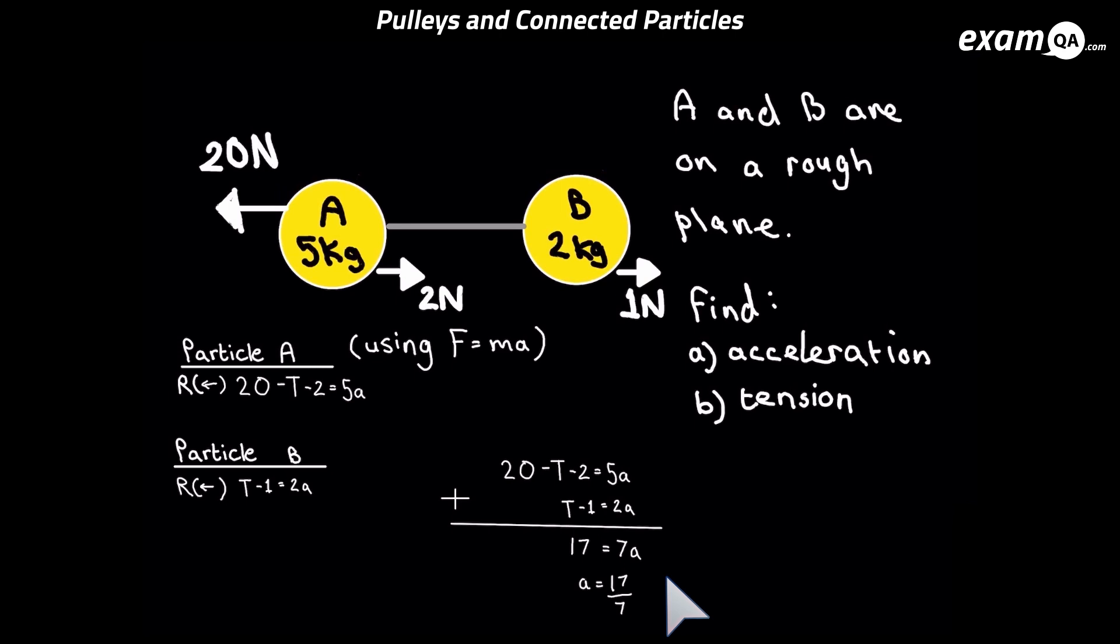Acceleration is 17 over 7. Now we can put that back into any of the two equations to get our T. I've chosen the equation from particle B because it was just a little bit simpler, and working that out gives us tension as 24 over 7. The units for tension would be Newtons.